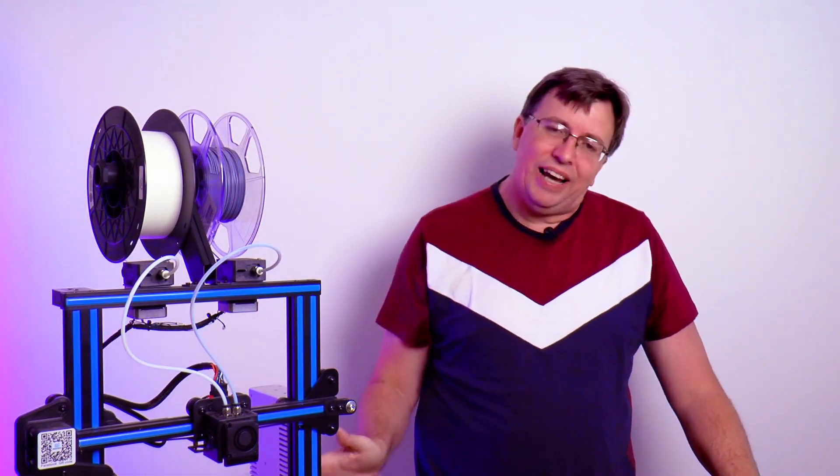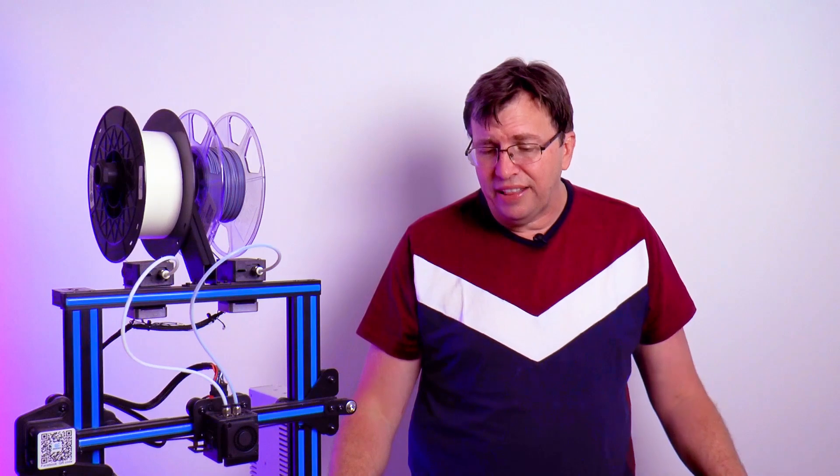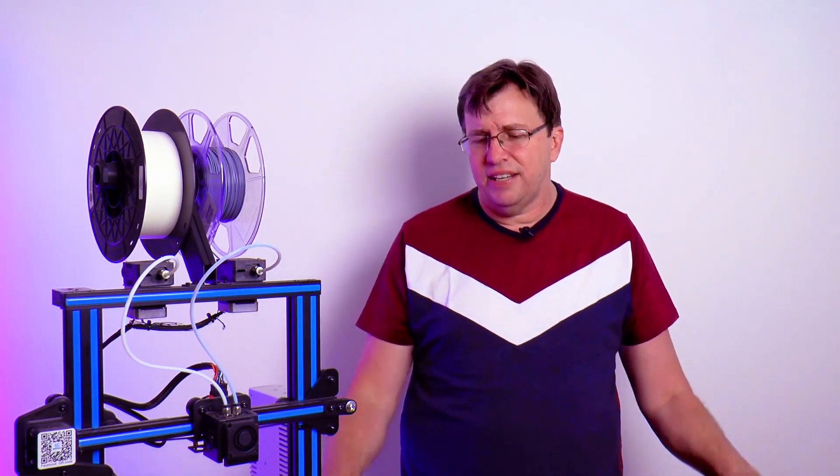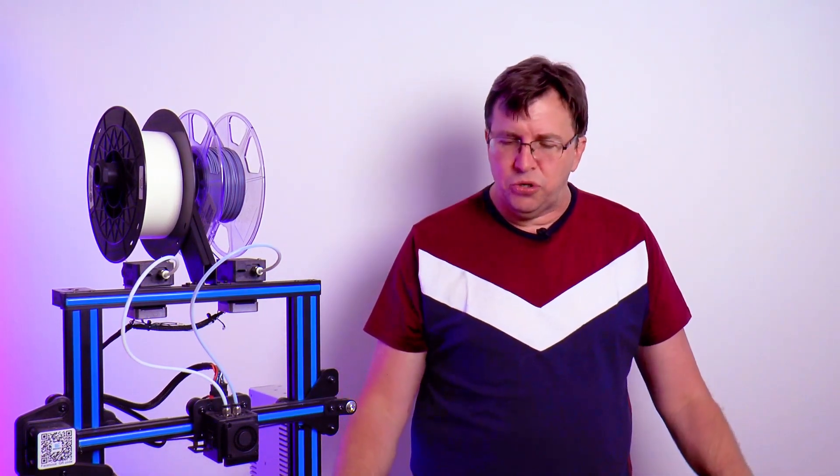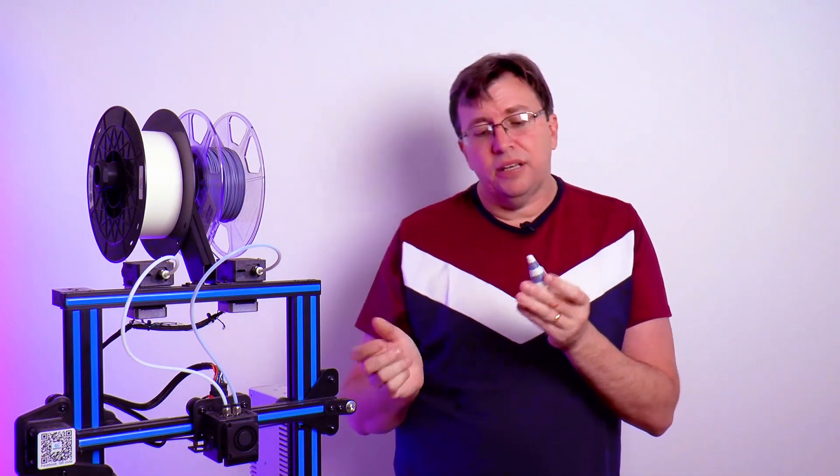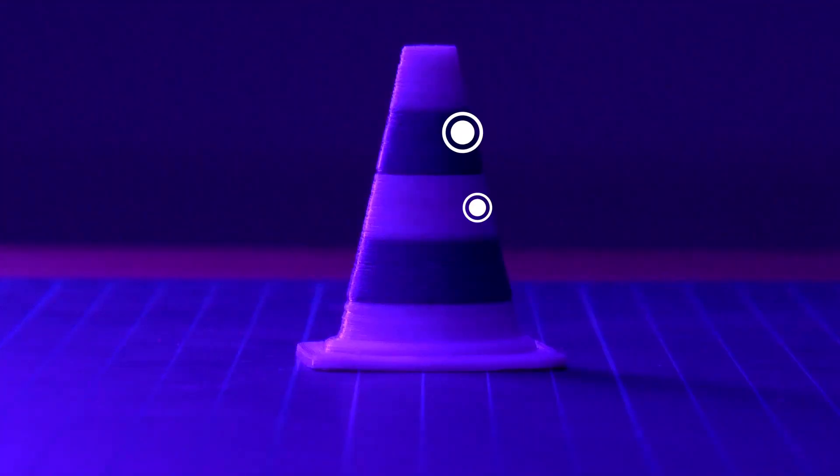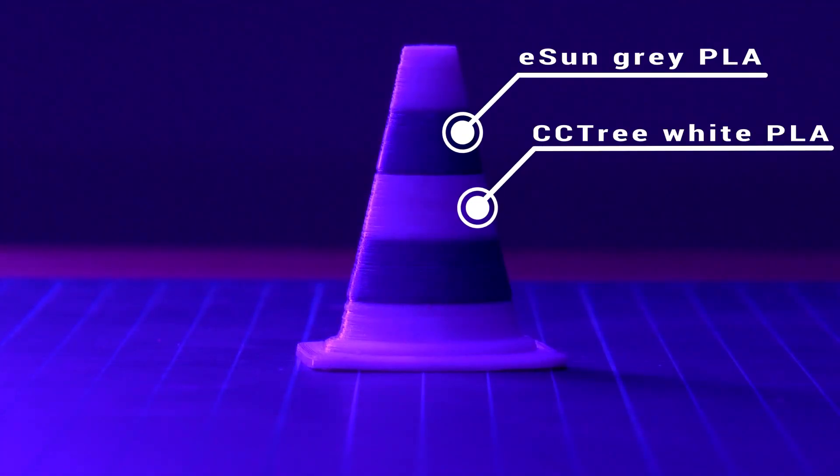Printing in dual color works well. Once you get the Cura settings and all your slicer settings working well, you switch over between the colors. I've done some nice prints here. Here's a little cone that you can print. Your color separation is good.